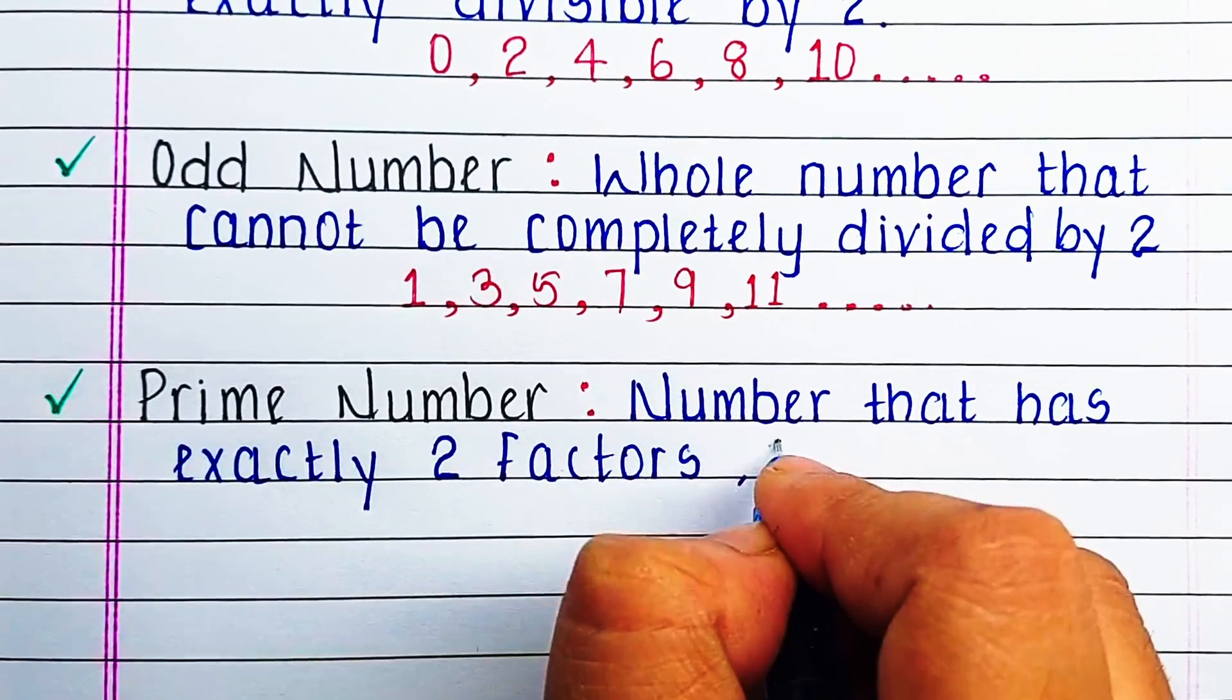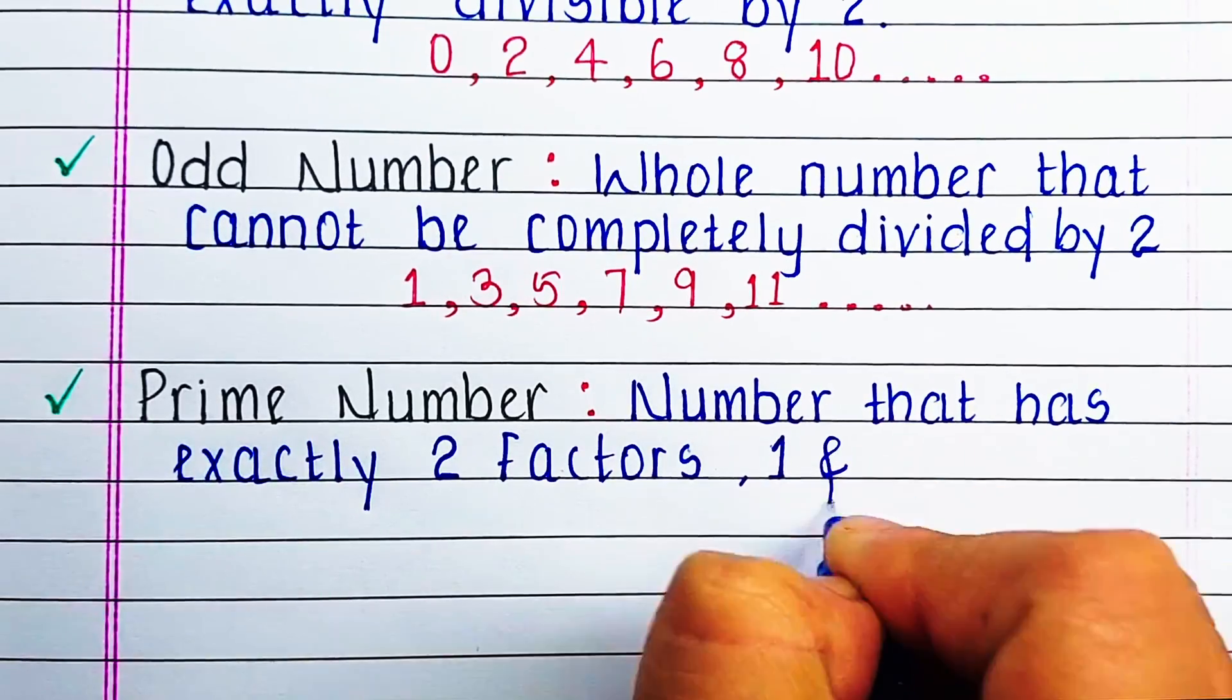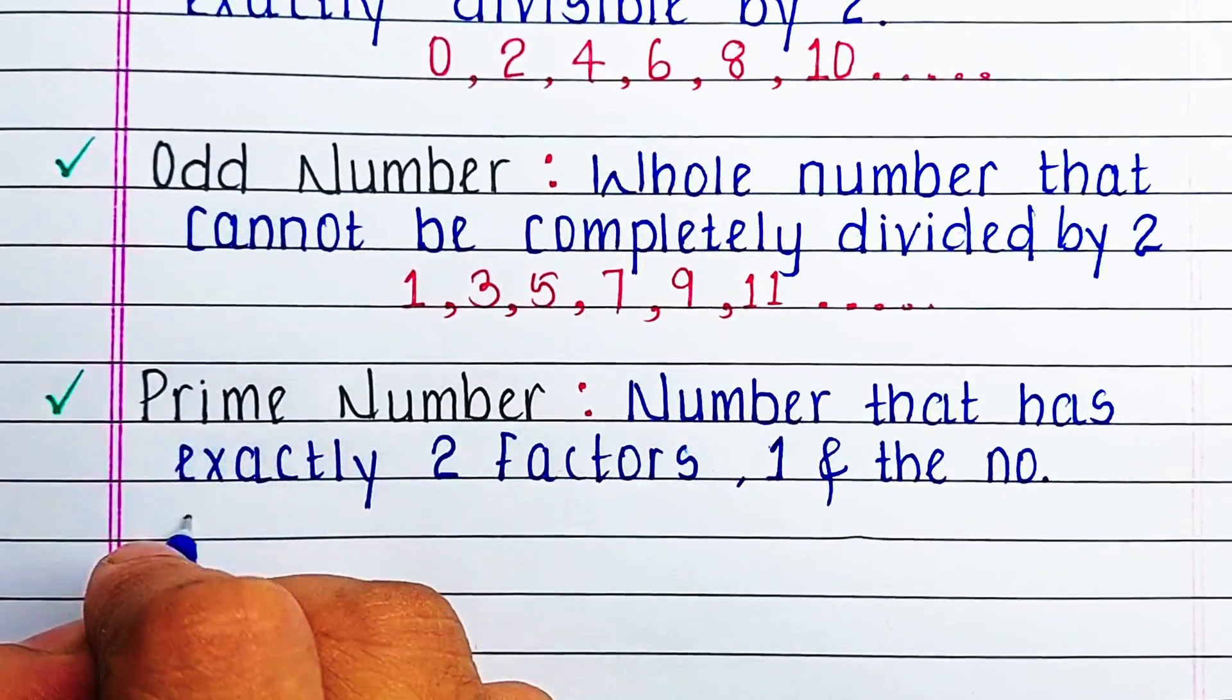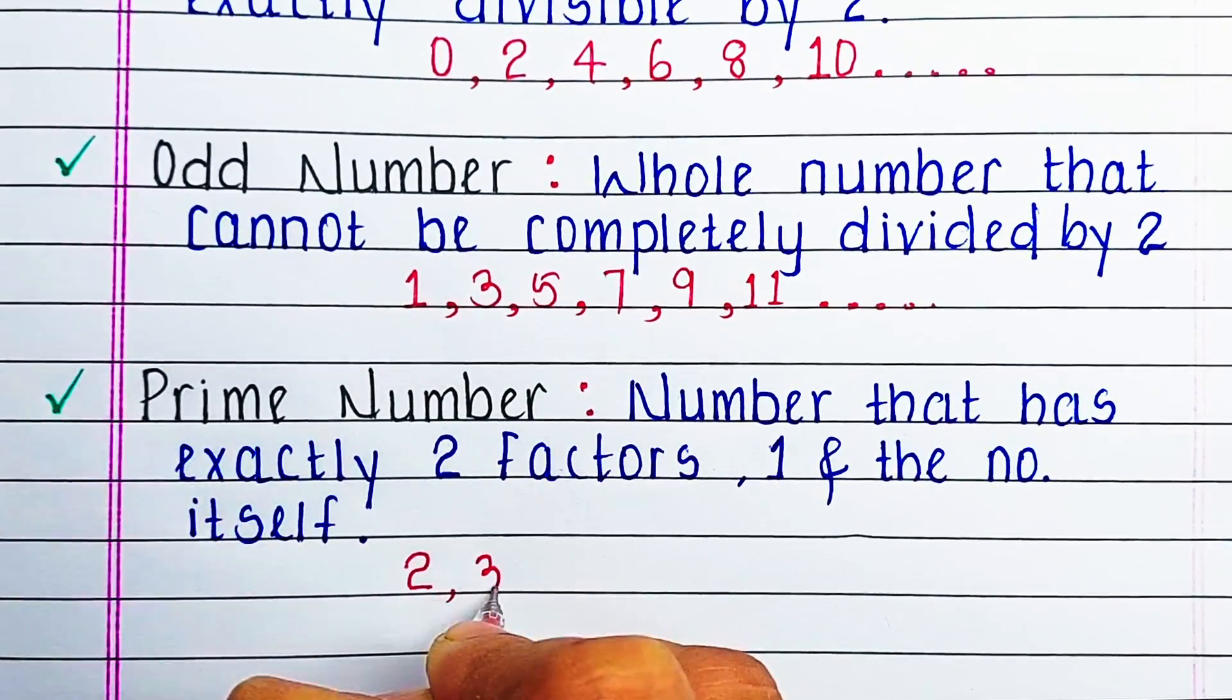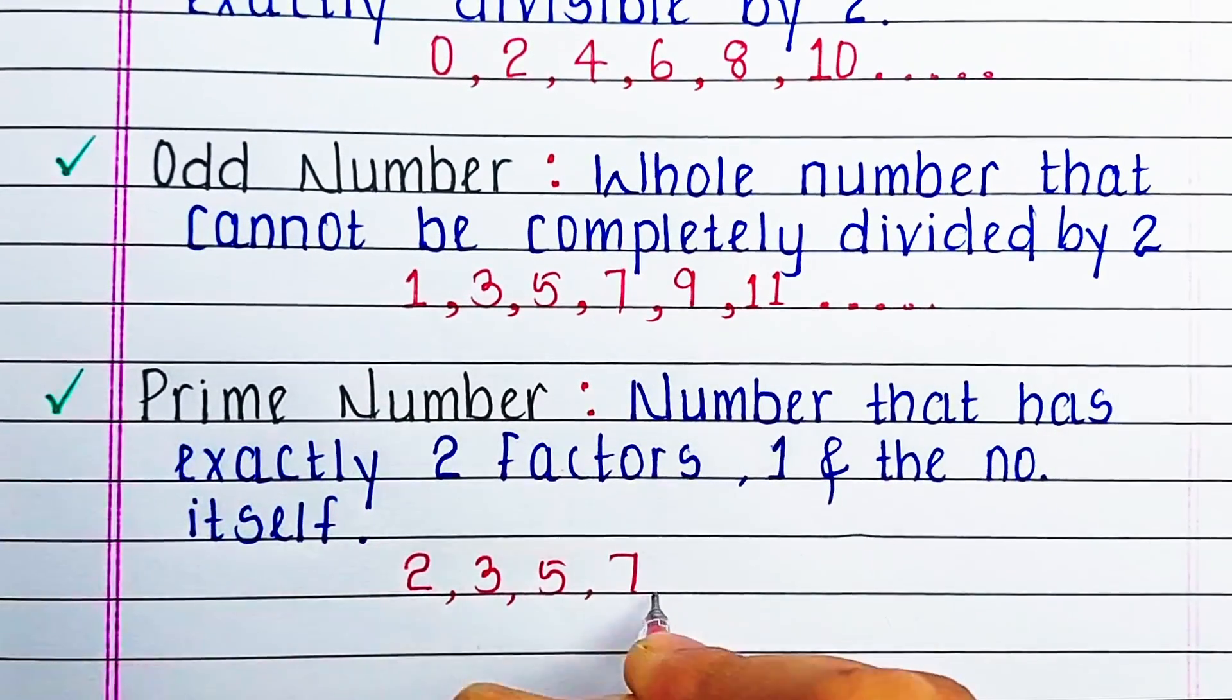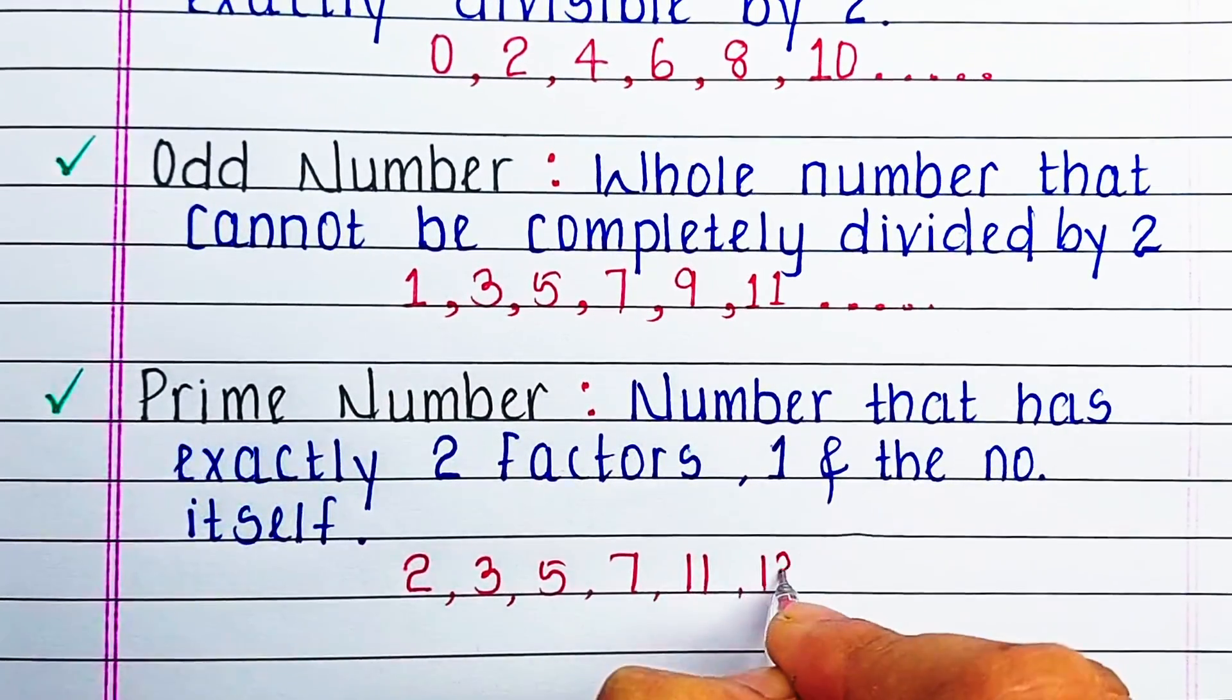Next is prime number. Numbers that has exactly two factors, that is 1 and the number itself, are known as prime numbers. For example, 2, 3, 5, 7, 11, 13, 17, etc.